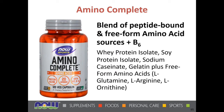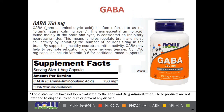AminoComplete is a capsule version combining peptide-bound and free-form amino acids from whey and soy protein isolates, sodium caseinate (a milk protein), gelatin, and free-form amino acids including L-glutamine, L-arginine, and L-ornithine. GABA 750 is one of the top-selling amino acid products — NOW also offers GABA in a 500 mg capsule and a 750 mg tablet in sustained-release form.